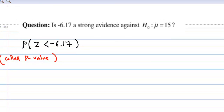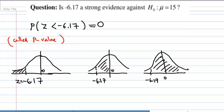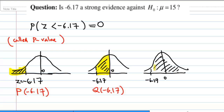We can use the calculator to find the probability of z less than a certain number. For example, we want to find the area in the standard normal curve for z less than negative 6.17. This is called p of negative 6.17. If you are going to find the area between 0 and negative 6.17 under the standard normal curve, this is called q of negative 6.17. Whereas if you are trying to find the area to the right of negative 6.17, this is called r of negative 6.17.